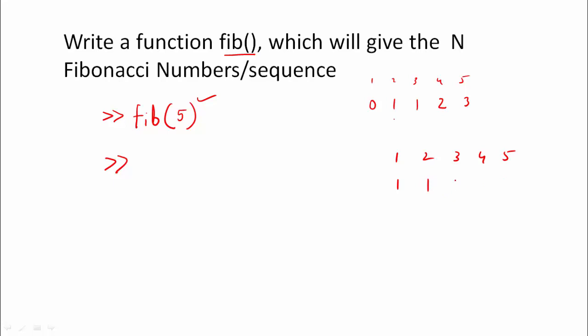So the sequence goes: 1, then 2, then 1 plus 2 equals 3, then 2 plus 3 equals 5. So the 5th value is 5 — I should get the answer as 5.